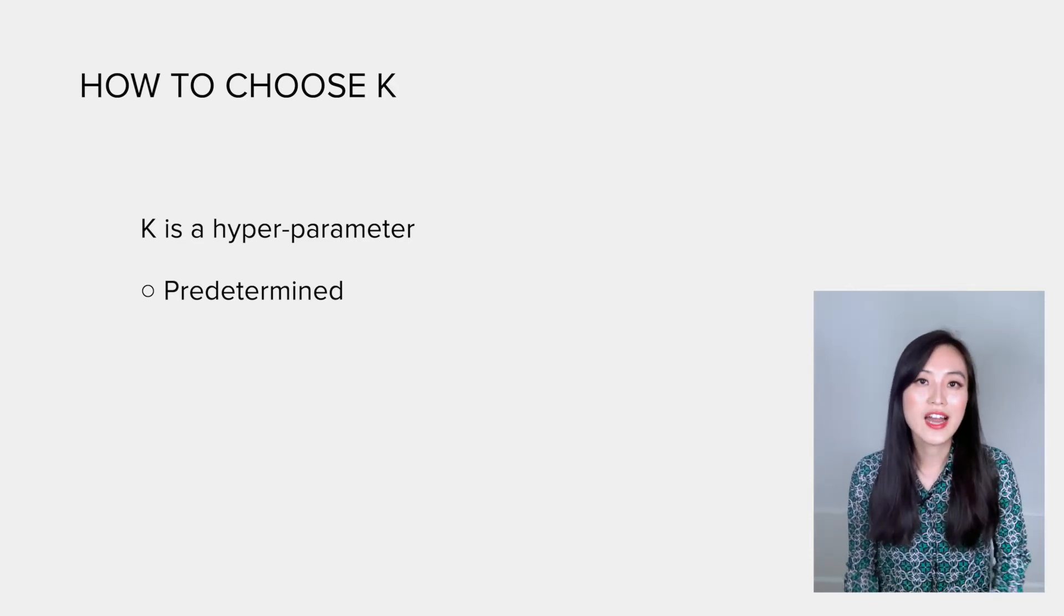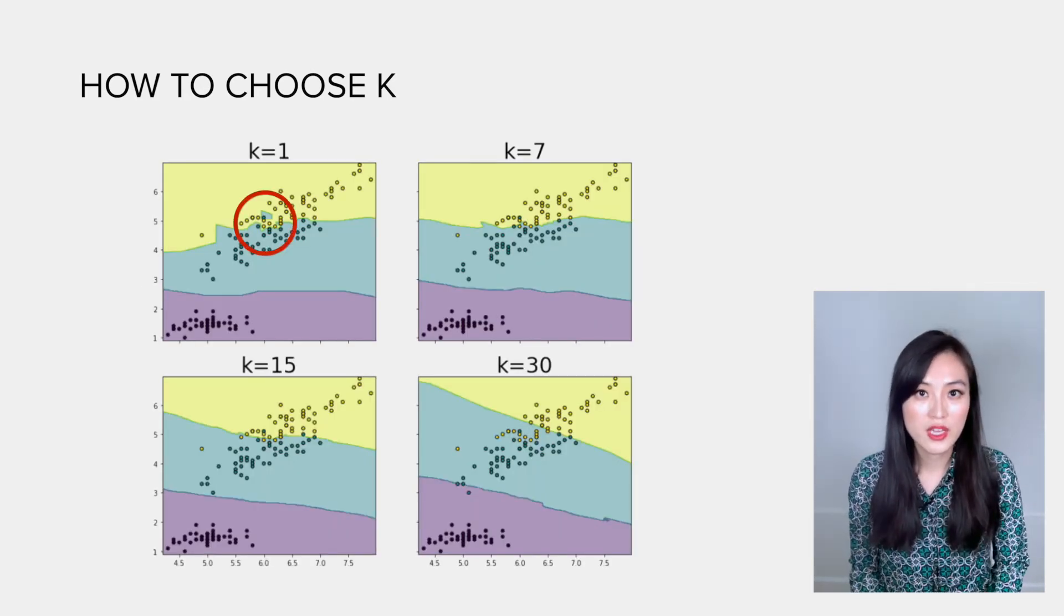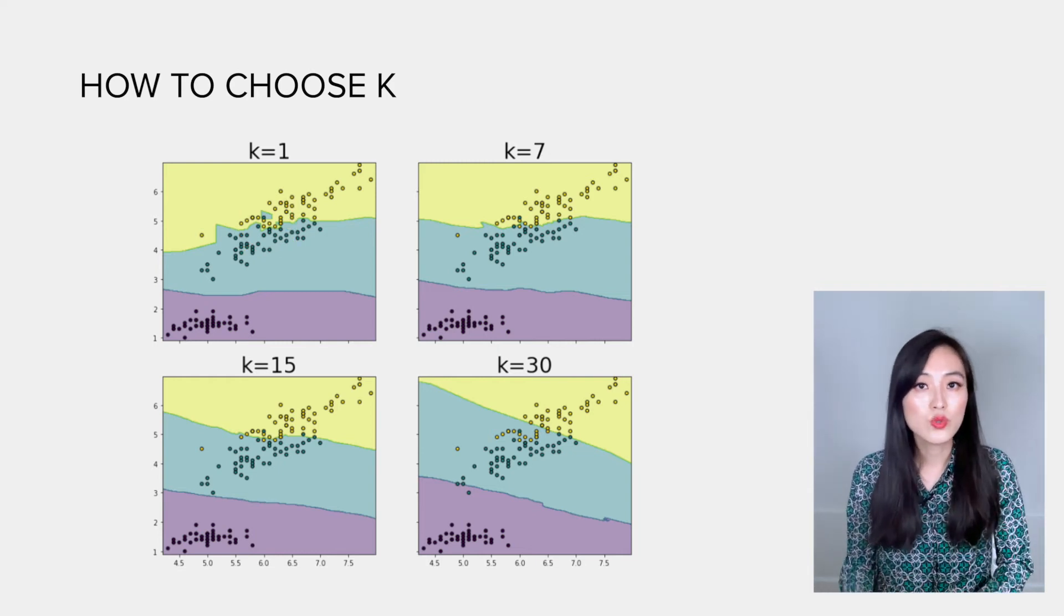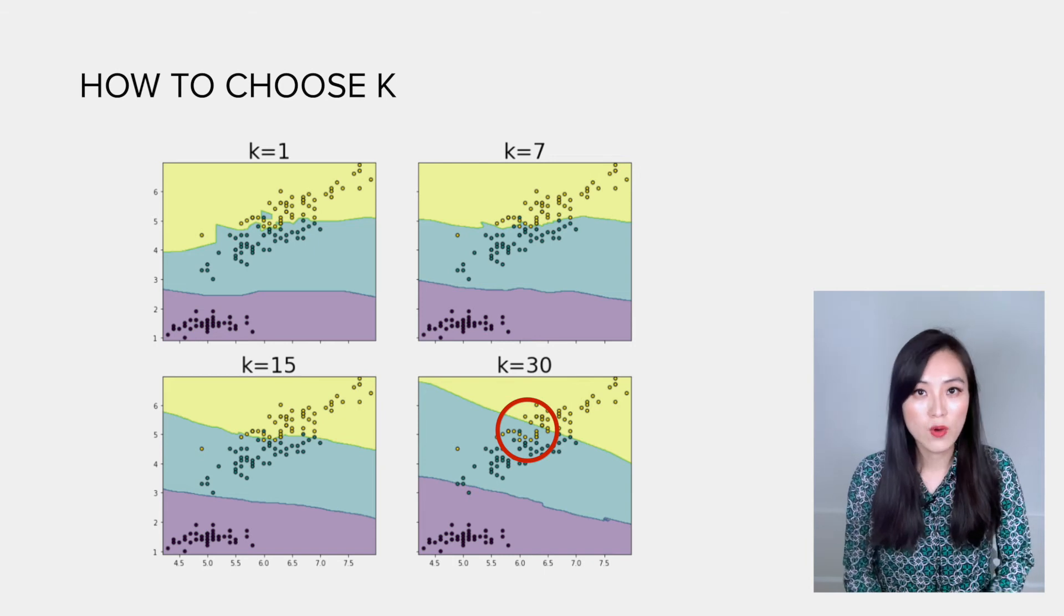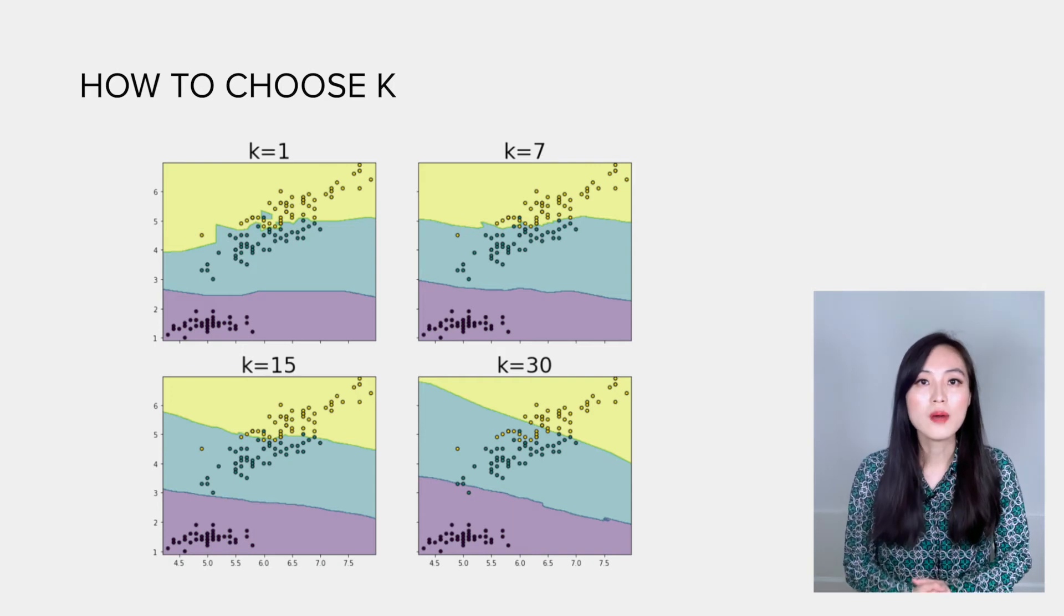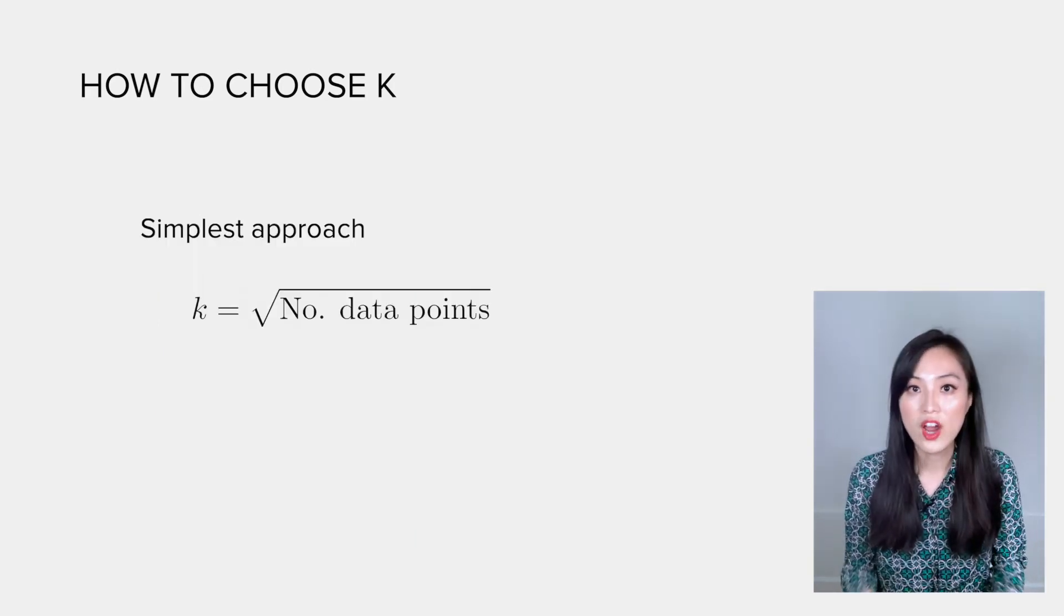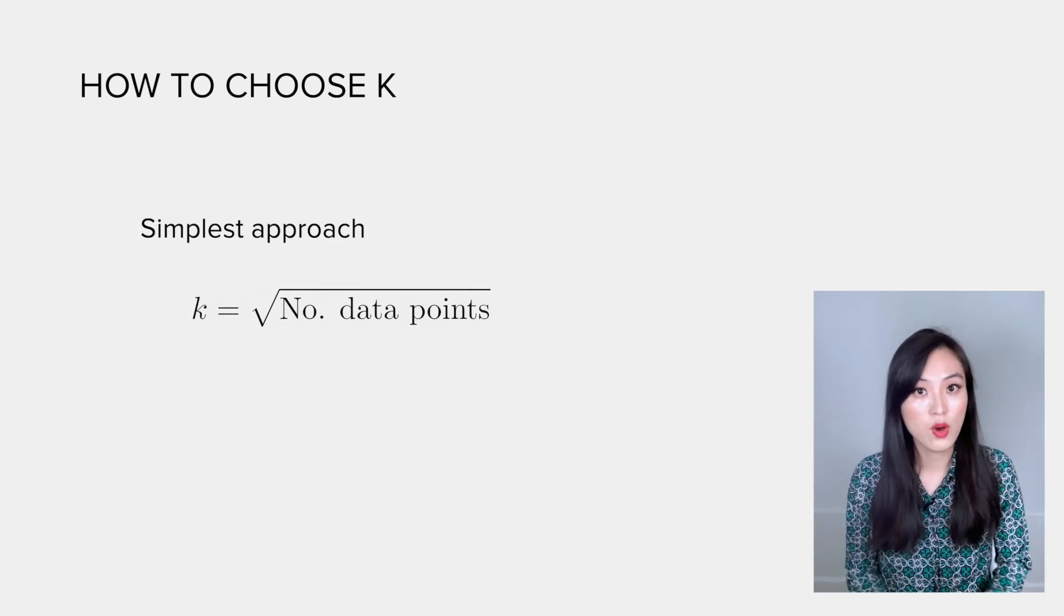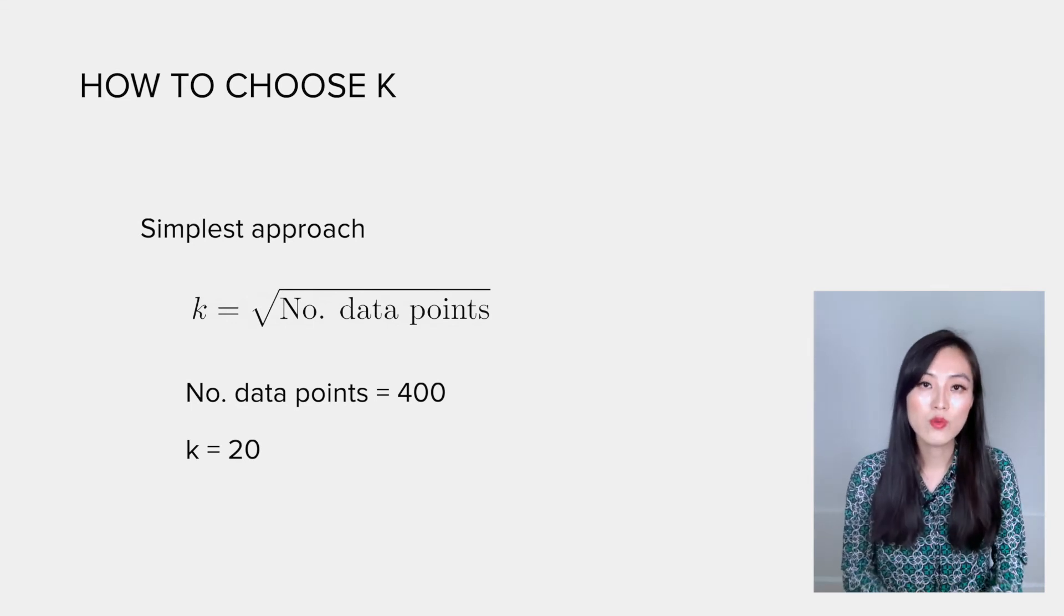So it's kind of arbitrary. When k is too small, predictions can be noisy, so we rarely set it as one. But when k is too large, the prediction is averaged over too many data points. The result is not accurate either. So how do we determine the optimal k? One simple approach, as you may find in many articles, is to use the square root of the total number of data points. Say you have 400 data points, k would be 20.